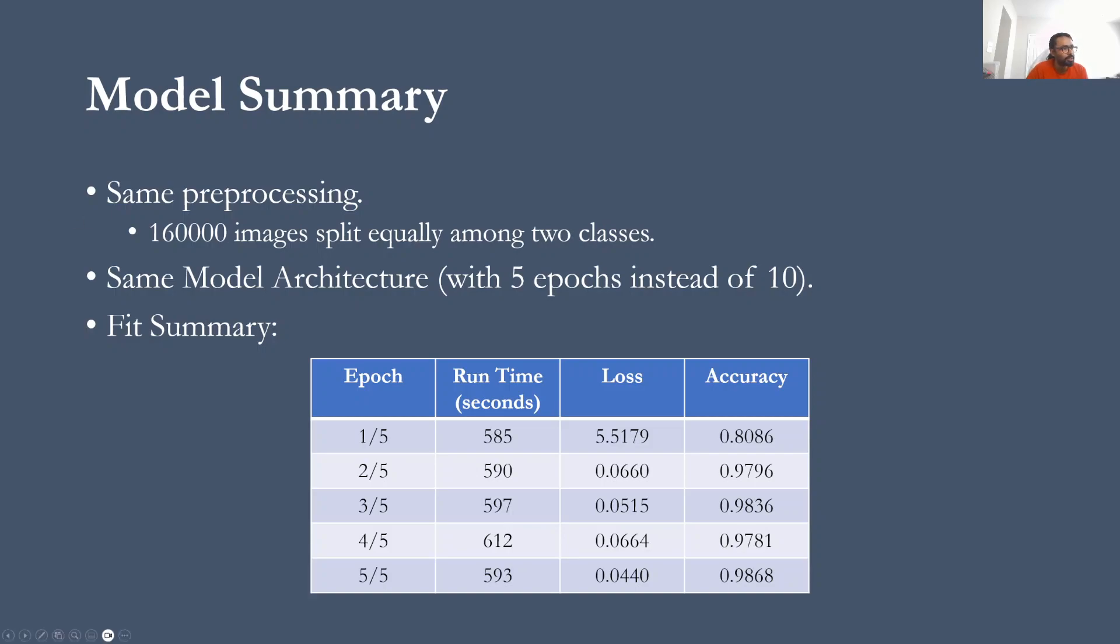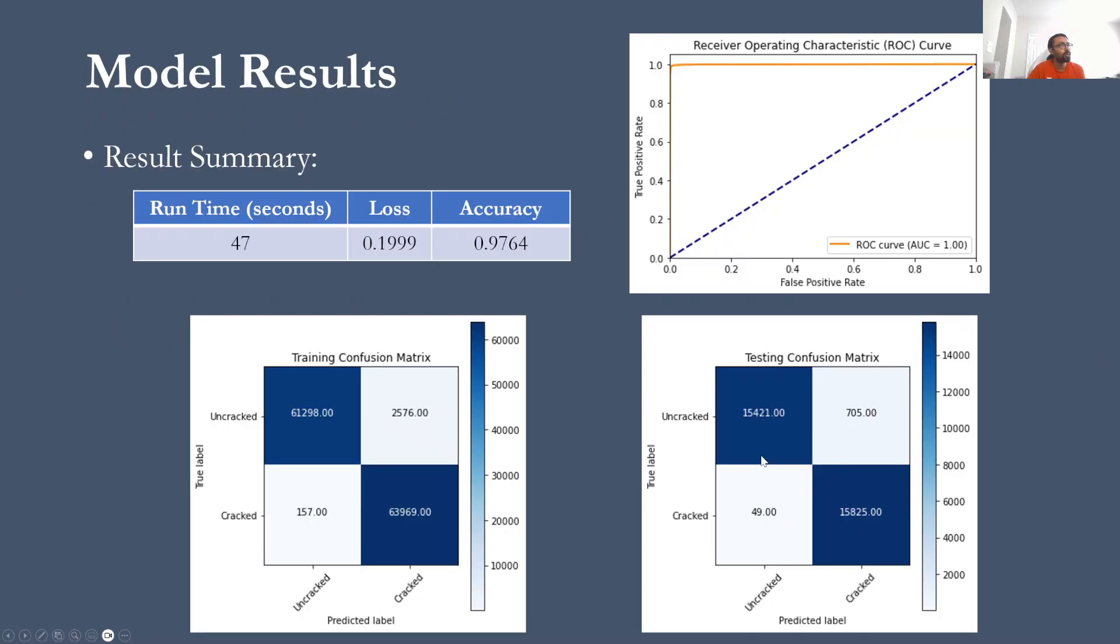And then I fit the model by using only five epochs this time instead of 10. So since I did 90, 180, and 270 degree rotations, I now have 160,000 images in this dataset. So by performing this on the fifth epoch, you can see I got an accuracy of 98% on the training data. On the testing data as well, the accuracy is nearly 98% and the diagonal values are of course higher. And in the ROC curve, you can see the area under the curve is very close to one.